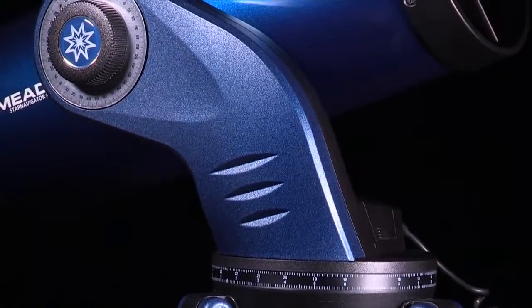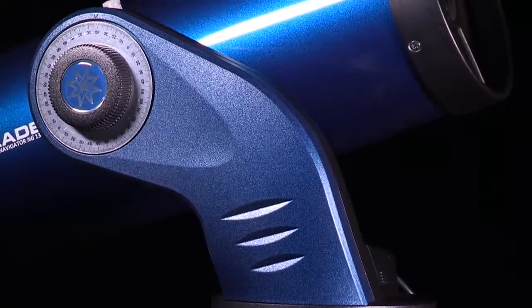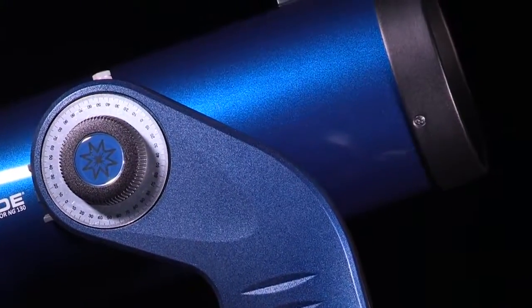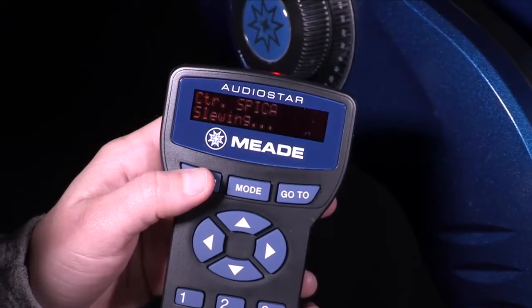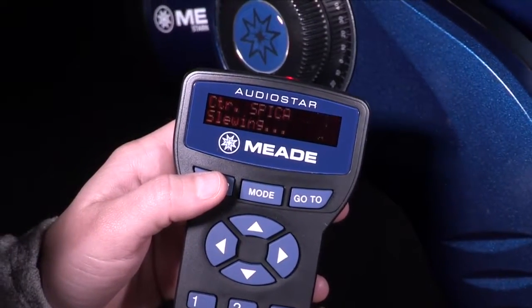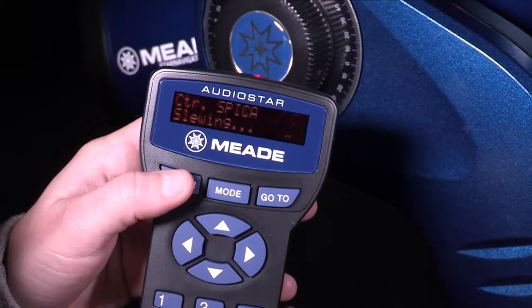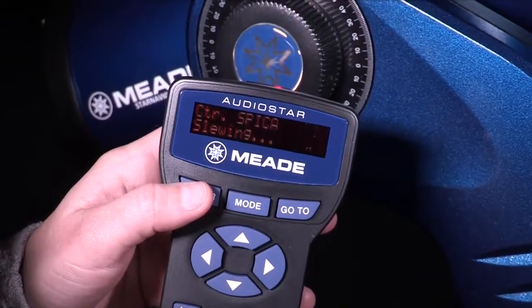There are multiple ways to align your telescope, but the two-star alignment procedure is the easiest and fastest way to locate objects with the AudioStar's go-to capabilities. AudioStar automatically chooses two stars to align upon. When the telescope slews to the first star for alignment, it may not appear in the field of view in the eyepiece.